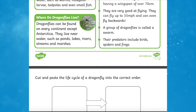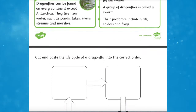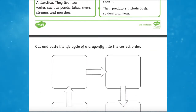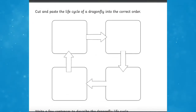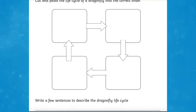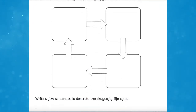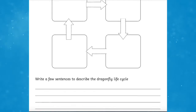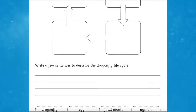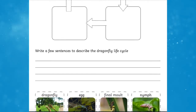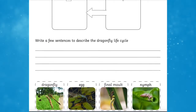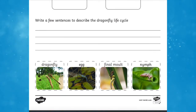The second page contains a dragonfly life cycle activity for children to complete. There are four images representing different stages of the life cycle for children to cut out and sequence in the spaces provided, as well as some lines for them to record a simple sentence about each stage.